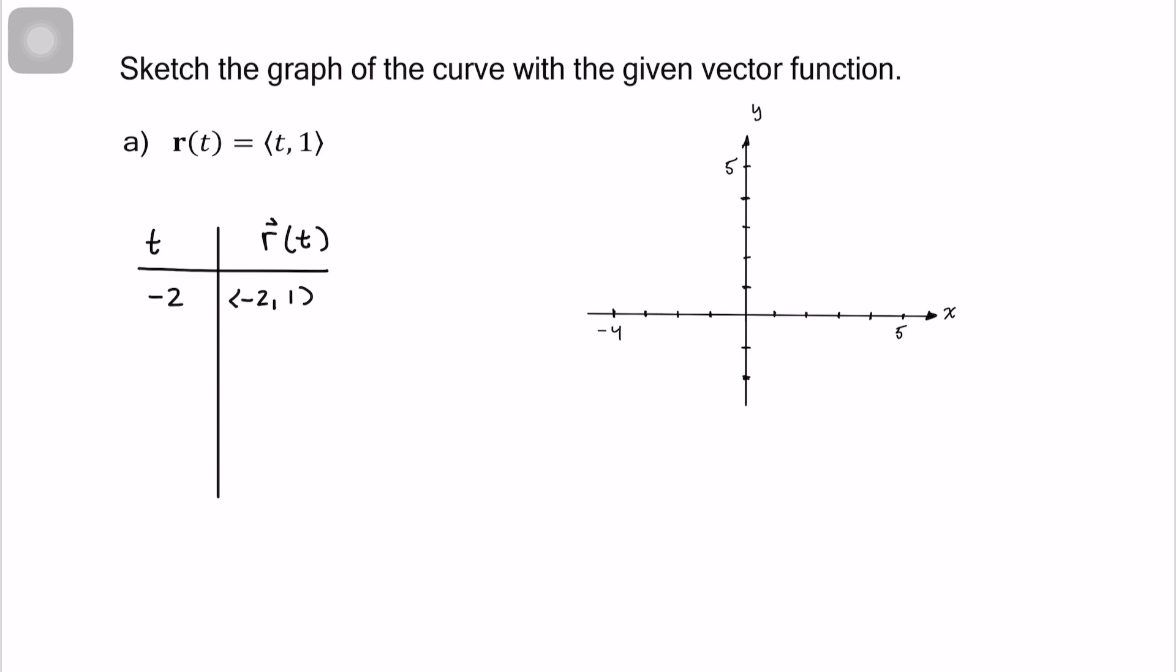All right, so what about when t equals negative 1? We end up with negative 1, 1. And hopefully you're seeing what's going on. The only value that's changing is the x-coordinate. So for 0, we'll have 0, 1.